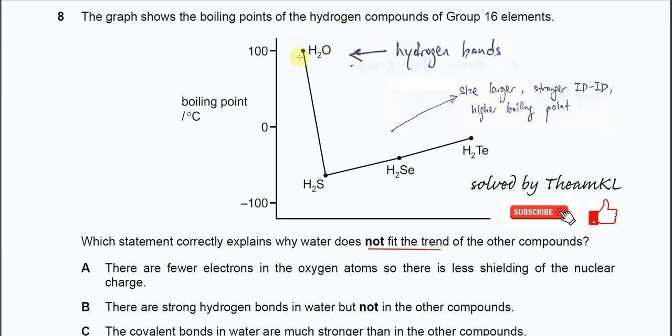Why the water does not fit is actually most likely because of the hydrogen bonds. The size of H2O is the smallest. It's supposed to have a lower boiling point than the others if we just consider the IDID forces. Because the water molecules can form hydrogen bonds which is the strongest intermolecular force, therefore its boiling point is much higher than the others.